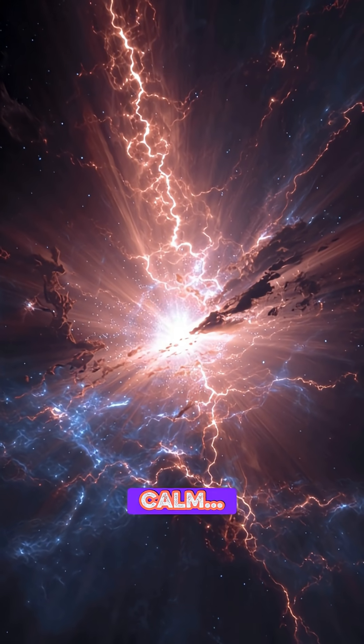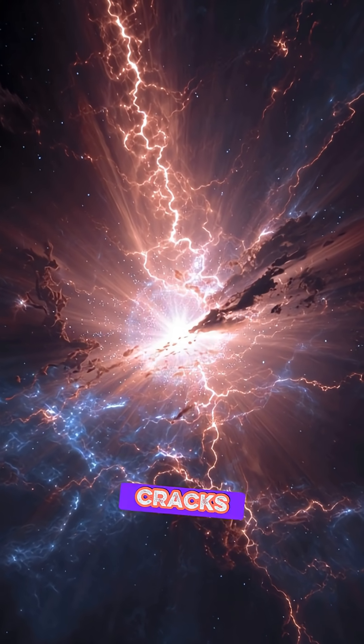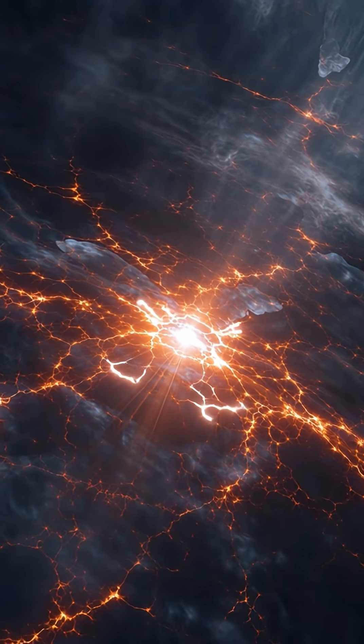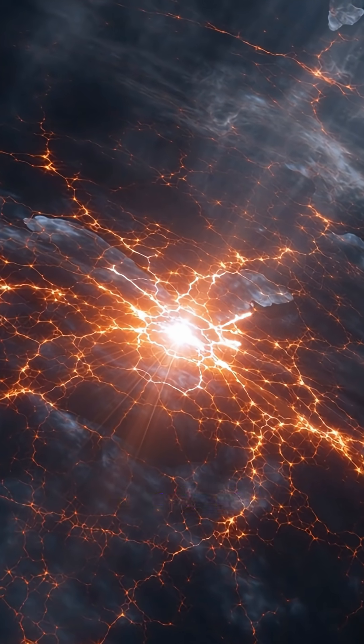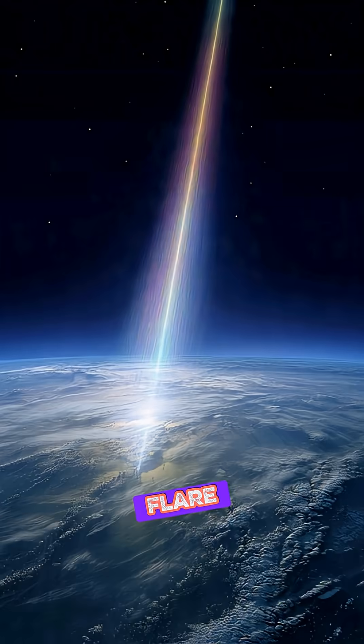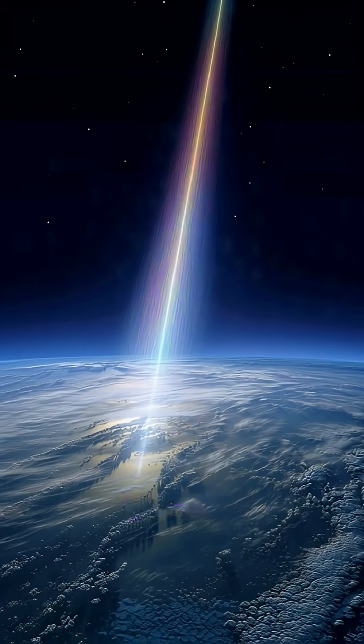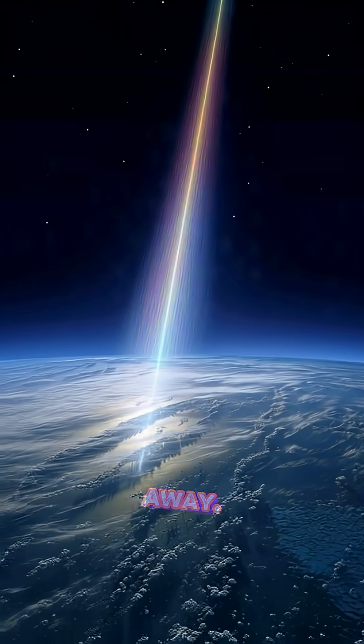Its surface may look calm, but beneath it, the crust cracks like tectonic plates. When it snaps, the magnetar releases a gamma ray flare, so powerful it can affect Earth from thousands of light years away.